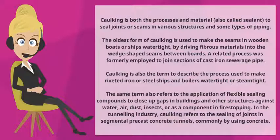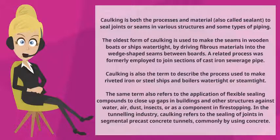A related process was formerly employed to join sections of cast-iron sewerage pipe. Caulking is also the term to describe the process used to make riveted iron or steel ships and boilers watertight or steamtight. The same term also refers to the application of flexible sealing compounds to close up gaps in buildings and other structures against water, air, and dust.